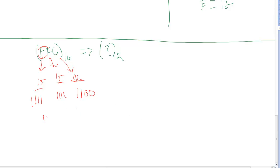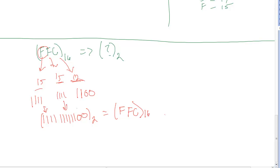We then combine them: 1, 1, 1, 1, 1, 1, 1, 1, 1, 1, 0, 0. And that's our base 2 equivalent of our base 16 number FFC.